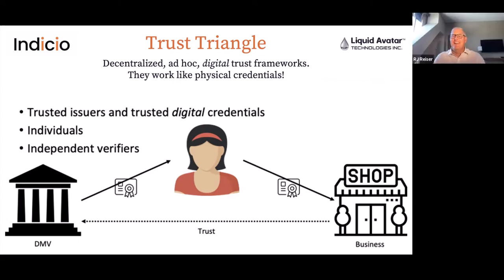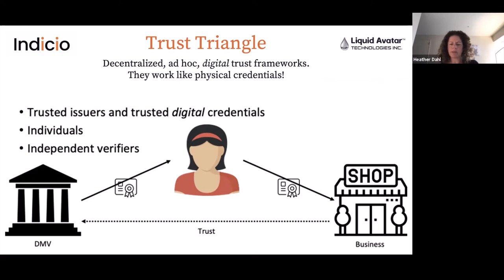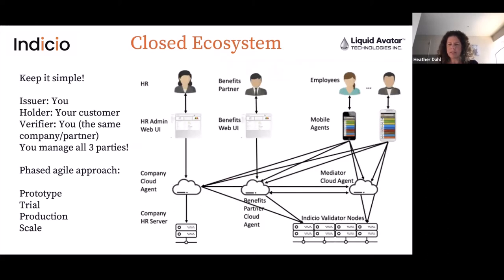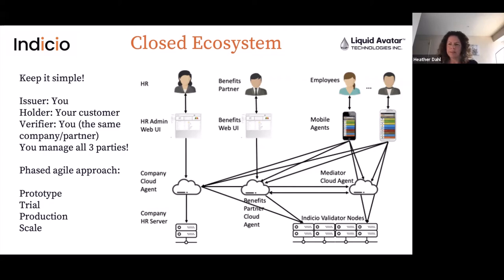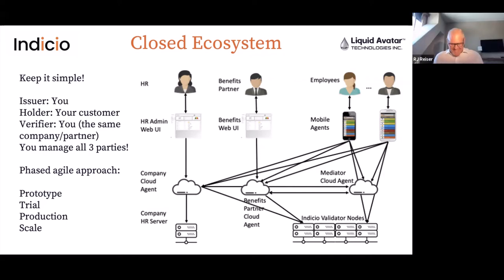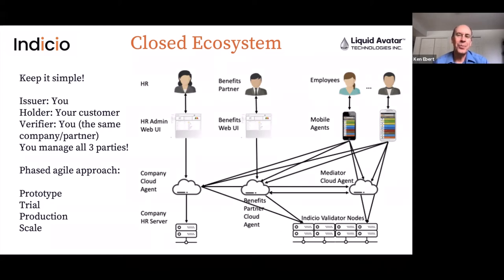Let's talk about the sausage making — the good stuff, the secret sauce of how you made so much progress between the day after Christmas and today. The recipe: take one part cloud agent, one part network or ledger that sits underneath it, one part mediator agent, add some custom UIs on top — and you will have a closed loop ecosystem. A closed loop ecosystem is a great place to start.